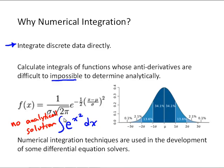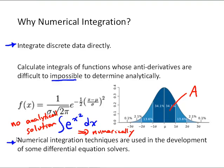However, the area under this curve — that area — is an important statistics measure. That's what gives us the confidence intervals that come from the bell curve Gaussian distribution. So it is a really practical calculation that we know exists, and this needs to be done numerically. A last application is to use numerical integration techniques in the development of differential equation solution algorithms, and we are going to start looking at that next week.